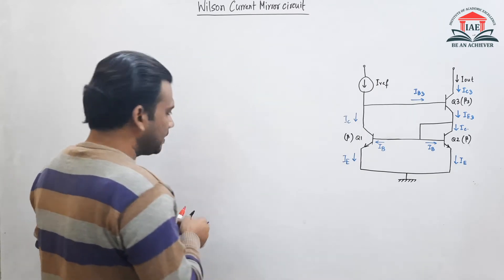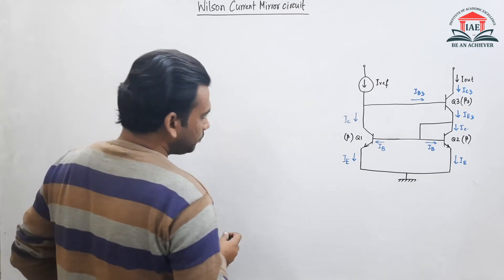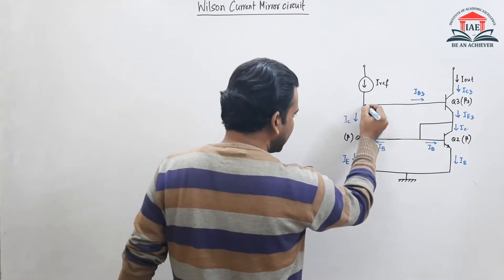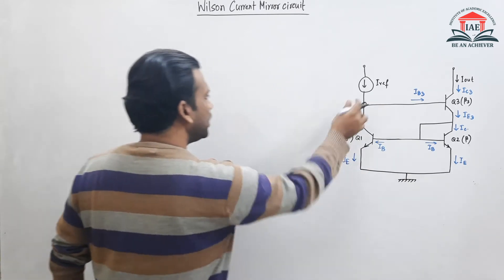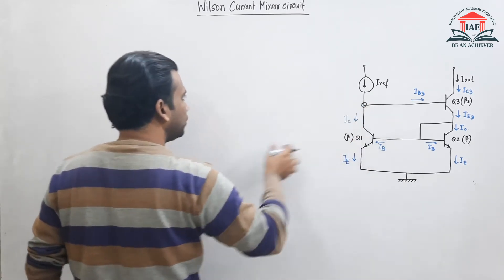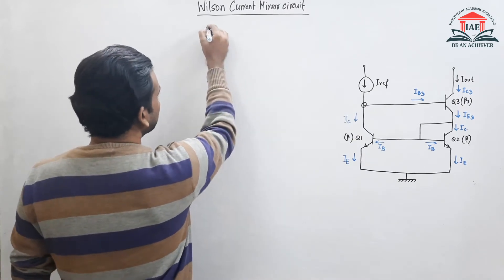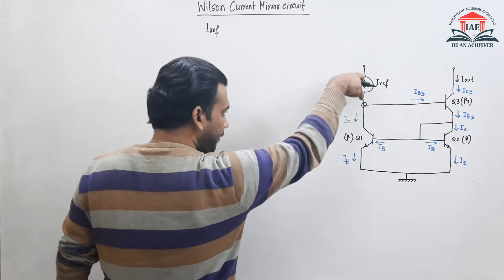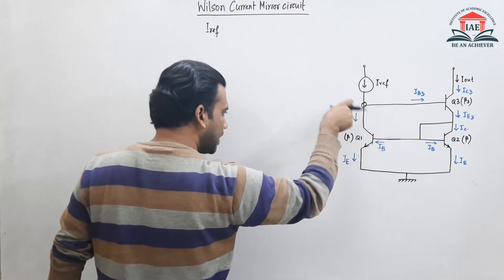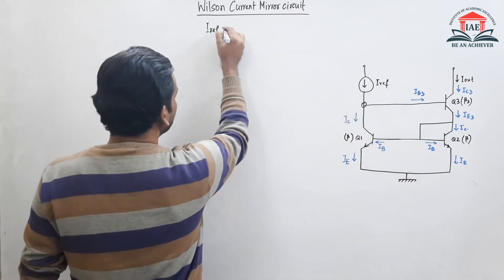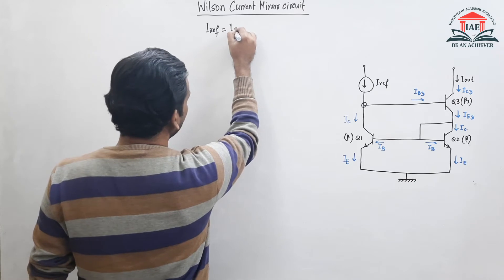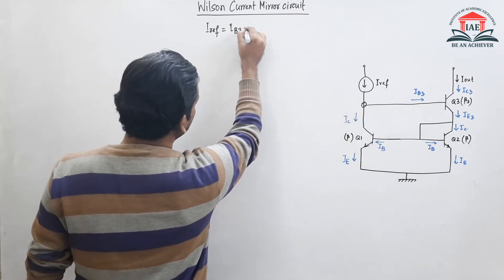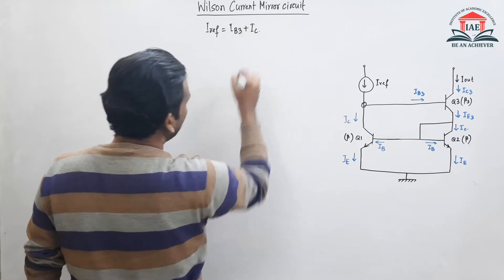Now let us apply KCL equations. Applying KCL at the top node, the equation is: I-reference equals Ib3 plus Ic.